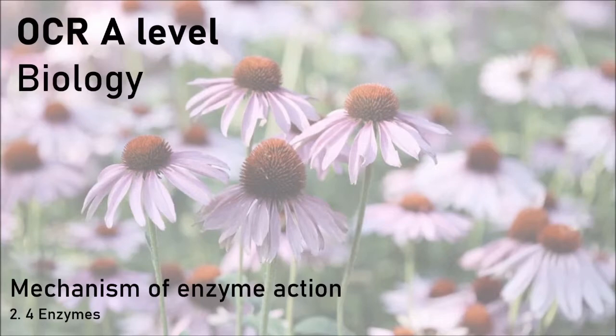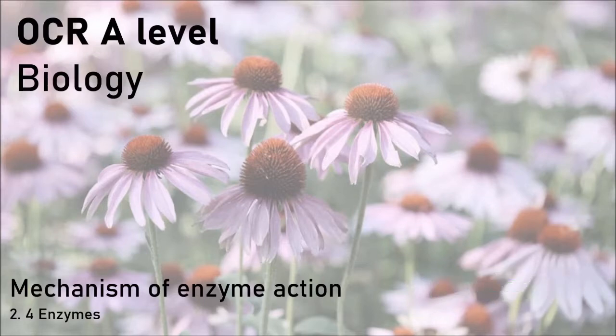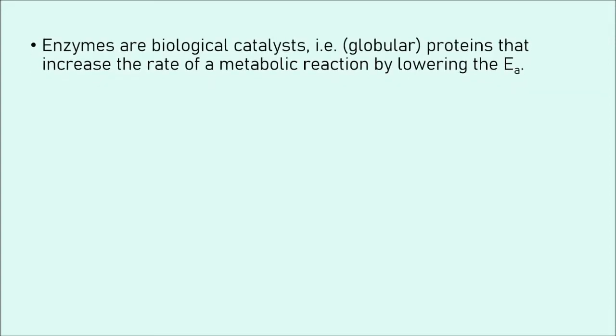Many chemical reactions require quite specific conditions to take place at a fast rate, for example high temperature or high pressure. In industry this is very often hard to achieve because it's expensive or can even be unsafe. In an organism, in our body, there's no chance we're going to increase our body temperature to 100 degrees Celsius. And this is where the role of enzymes comes in. Enzymes are biological catalysts, globular proteins that increase the rate of a metabolic reaction by lowering the EA. This is the definition of the term enzyme.